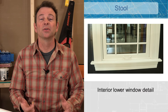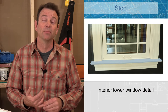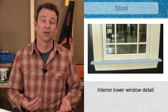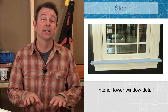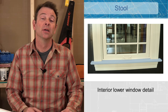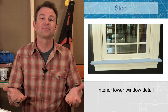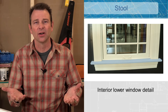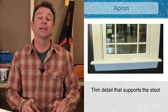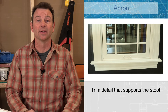Just below your casings will be your stool. The technical term is stool, though most people refer to it as a sill. A sill is typically on the outside and slanted, whereas the stool is usually on the inside and flat or level. The stool ends your casings and serves as a ledge on the window. Not all windows have a stool, but if you do have one there will typically be an apron — a simple trim piece below that helps support it.